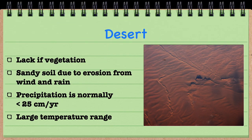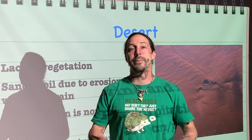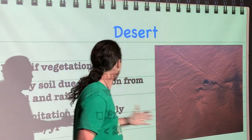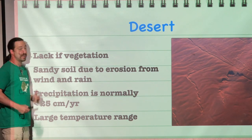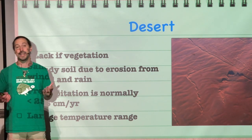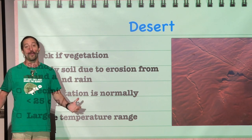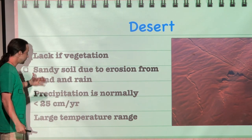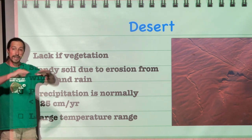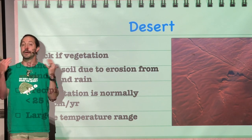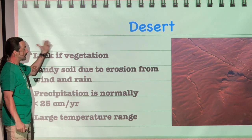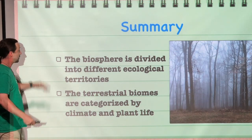A desert — one of the key things we recognize here is that there aren't a lot of plants able to live in the harsh conditions. The soil is really sandy and there is not much precipitation, less than 25 centimeters each year. That's not a lot of water to support plants. And because there's also not a lot of water in the air, there is a very large temperature range between the temperature of a desert during the daytime and at night.